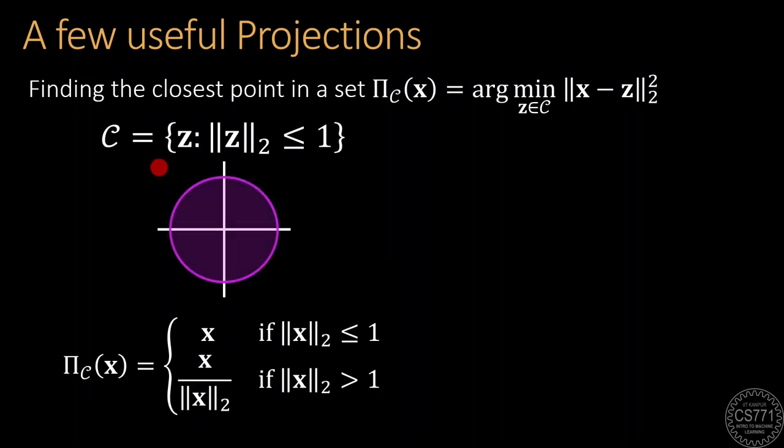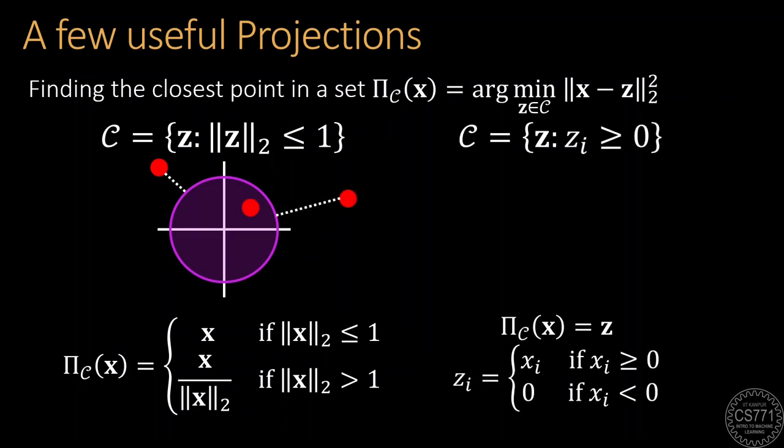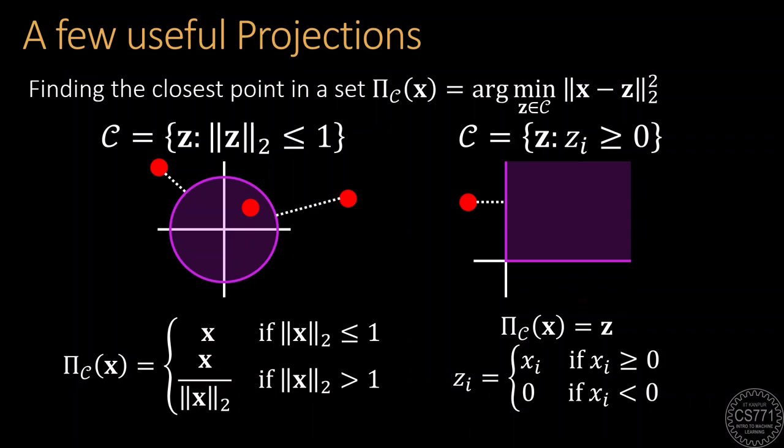In the first example, the set is the unit ball centered at the origin. Whereas in the second example, the set is the positive orthant, the set of all vectors whose all coordinates are non-negative. Recall that if the point being projected is already inside the set, then the projection is the point itself.